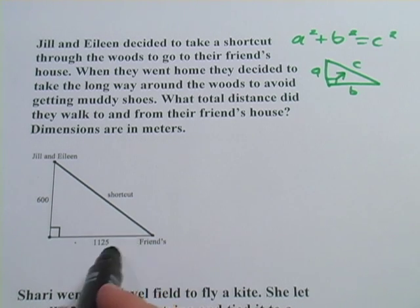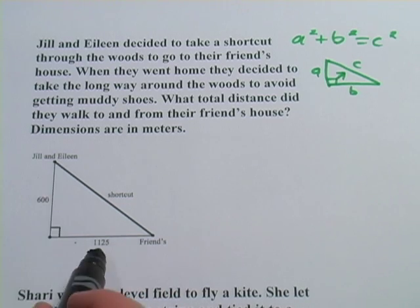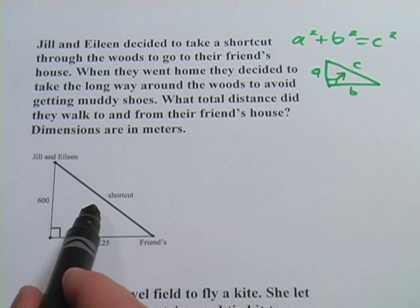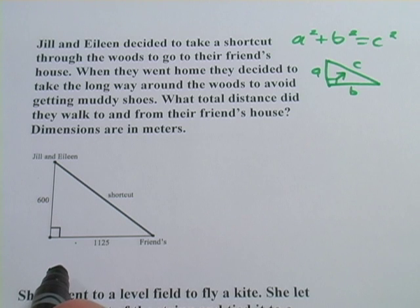Well, we know the distance, or we can figure out the distance they walked from their friend's house, right? They walked this distance and then this distance. We've got two numbers here, 1125 and 600. We'd add those two together. But then to get the to and from, we want to find out the length of this side of the triangle and add that to those other two.